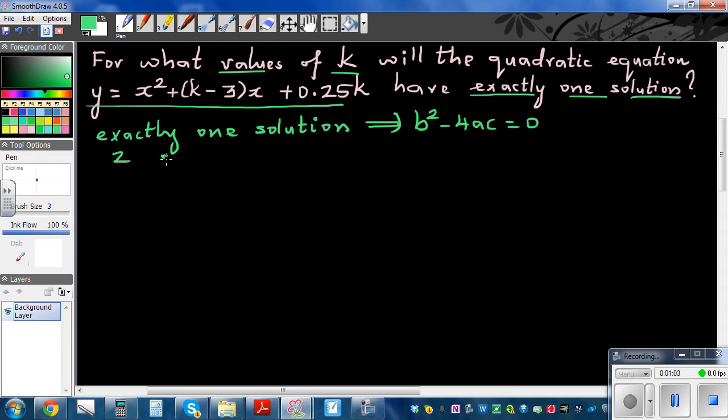So if you have two solutions, or the parabola cuts the x-axis at two distinct points, this implies b² - 4ac > 0. And you can have no solution, or the parabola does not cut the x-axis, means b² - 4ac < 0.